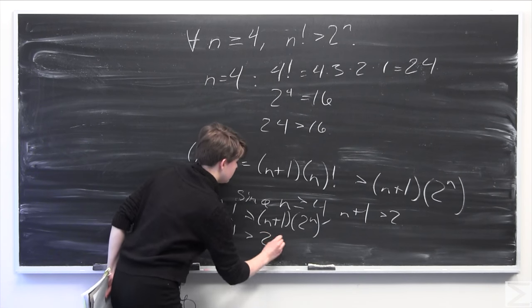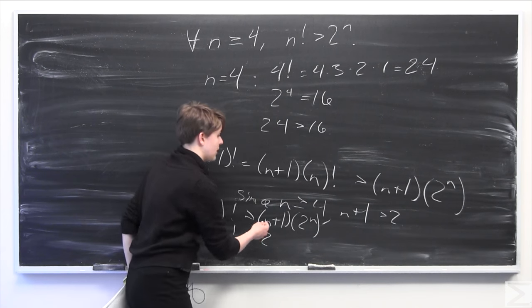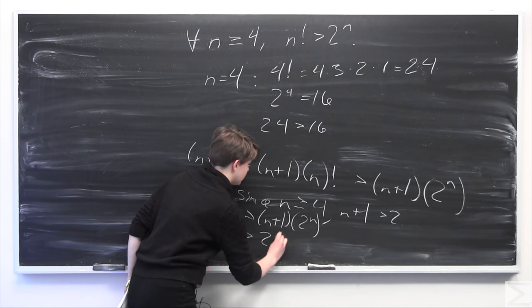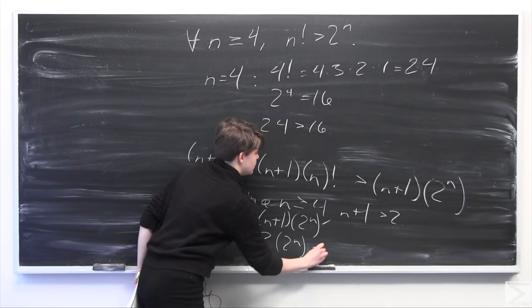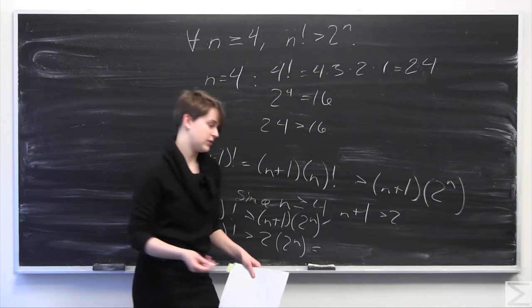And we know that 2 times 2 to the n is equal to 2 to the quantity n plus 1.